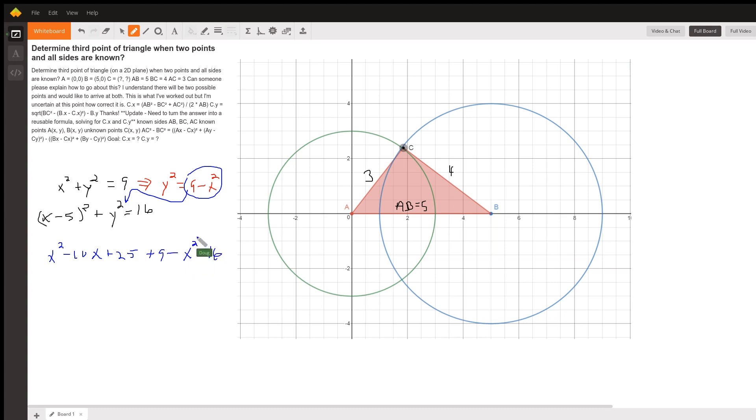The X squared's cancel out. I've got minus 10X plus 34 equals 16. 10X equals 18, so X equals 1.8.